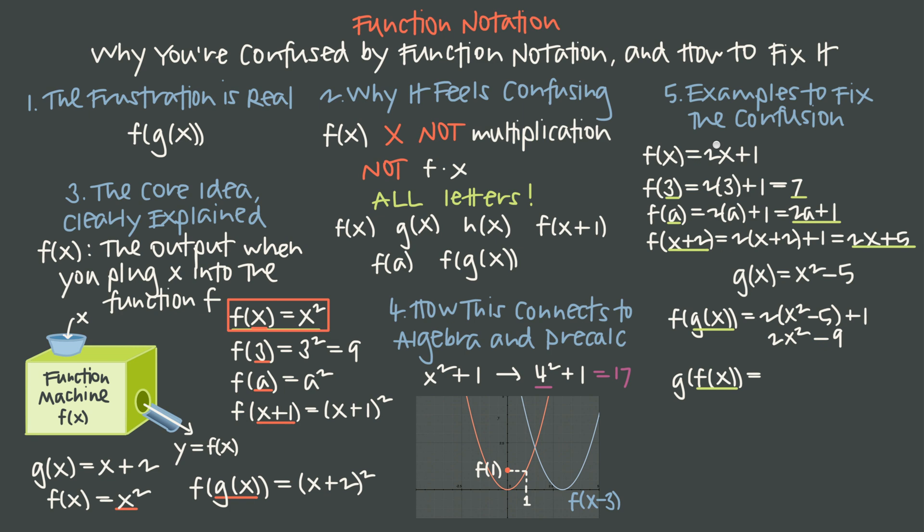The input's 2x plus 1, so we have to take 2x plus 1, square it, and then subtract 5 from the result. So that means we take 2x plus 1, we square it, and then we subtract 5 from the result. That's our composition, or if we wanted to, we could rewrite this, taking the binomial 2x plus 1, and multiplying it by itself, 2x plus 1,